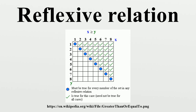The example 'has the same limit as' is defined on the set of sequences of real numbers. Not every sequence has a limit, and thus the relation is not reflexive, but if a sequence has the same limit as some sequence, then it has the same limit as itself.